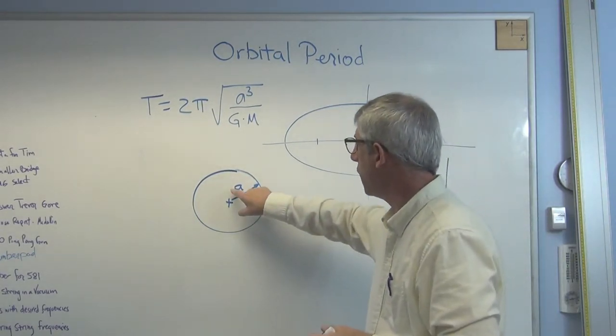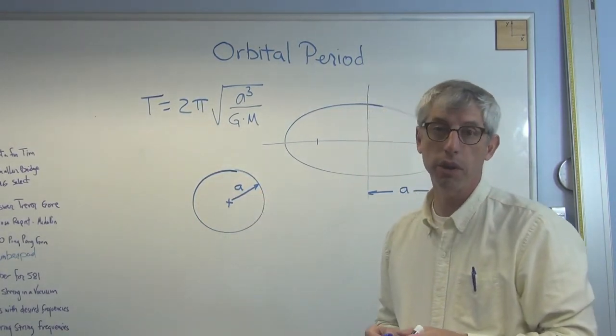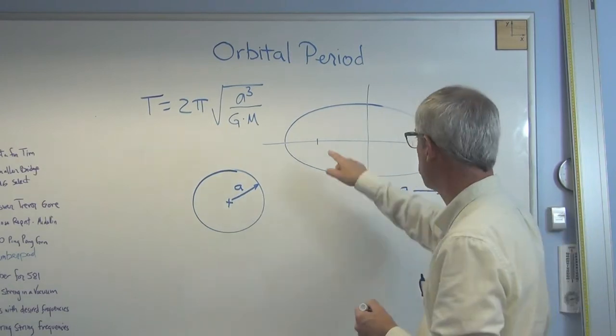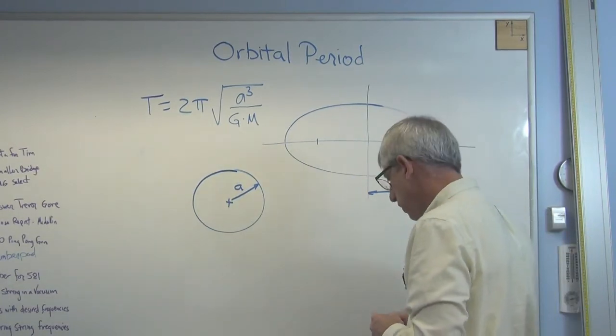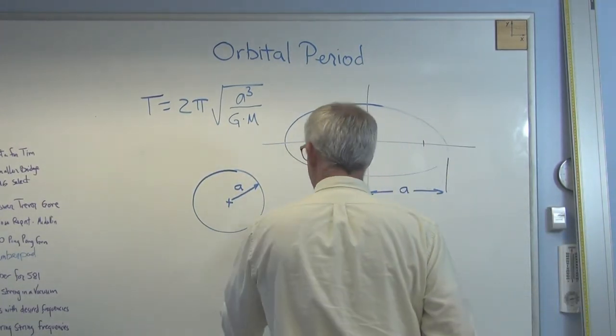So if you're in a circular orbit, A is just the radius. There is only one center point. There aren't two foci. So let's start by doing a problem where we already know the answer.